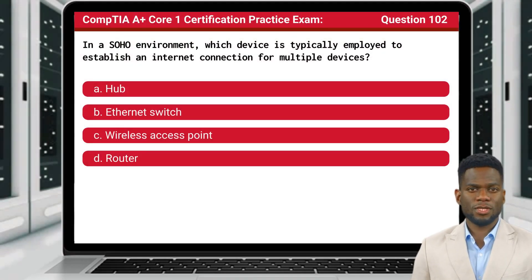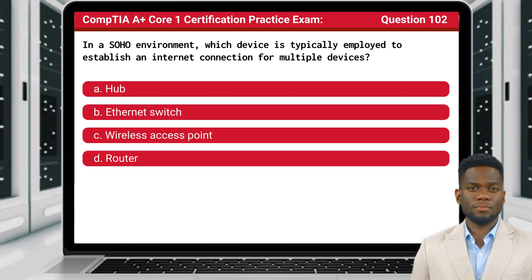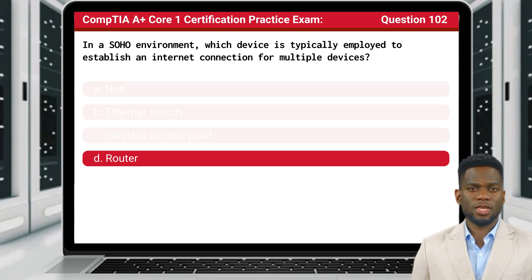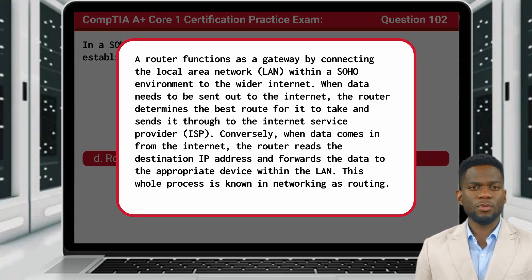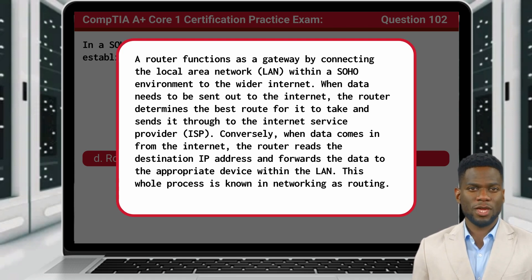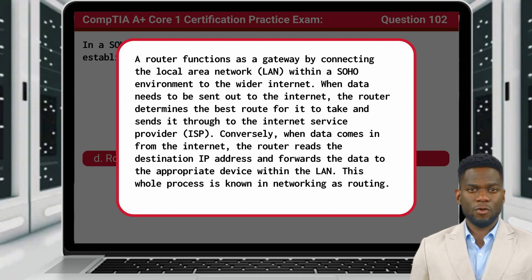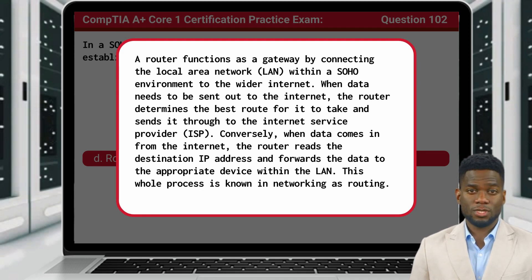Question 102: In a SOHO environment, which device is typically employed to establish an Internet connection for multiple devices? The answer is D: Router. A router functions as a gateway by connecting the local area network within a SOHO environment to the wider Internet. When data needs to be sent out to the Internet, the router determines the best route for it to take and sends it through to the Internet service provider. Conversely, when data comes in from the Internet, the router reads the destination IP address and forwards the data to the appropriate device within the LAN. This whole process is known in networking as routing.